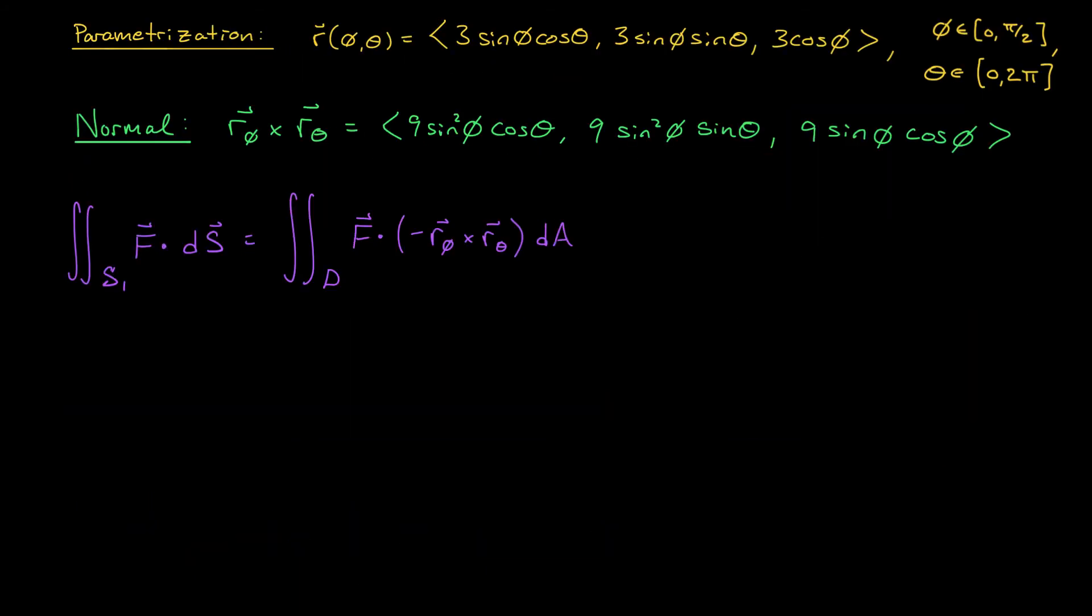Here's the relevant information from the last slide. We have the parametrization of our surface S₁. We have our normal vector, R_φ cross R_θ, and the integral we're trying to compute. Let's first find the integrand here, the dot product of our vector field F with the negative of our normal vector. Well, F here is given by ⟨0, Z, 1⟩, and if I take the dot product with the negative of this vector here, I'm going to get the double integral over D of −Z times 9 sin² φ sin θ − 9 sin φ cos φ.